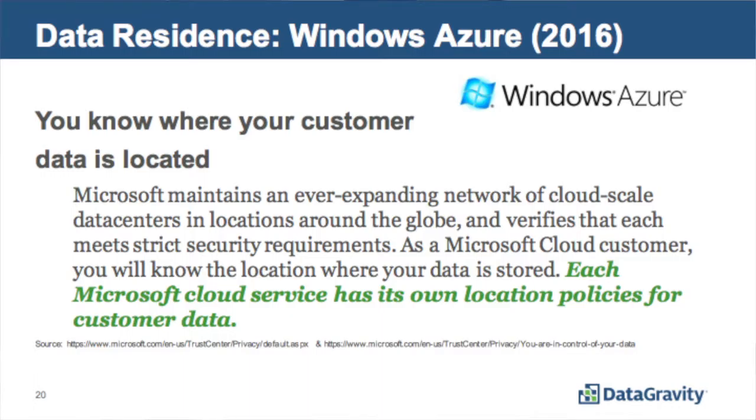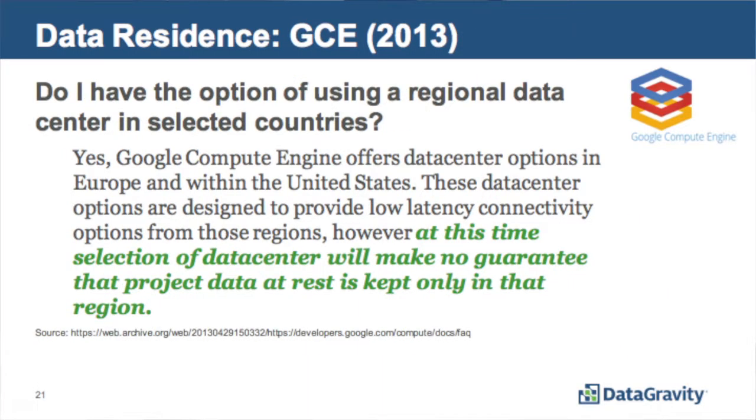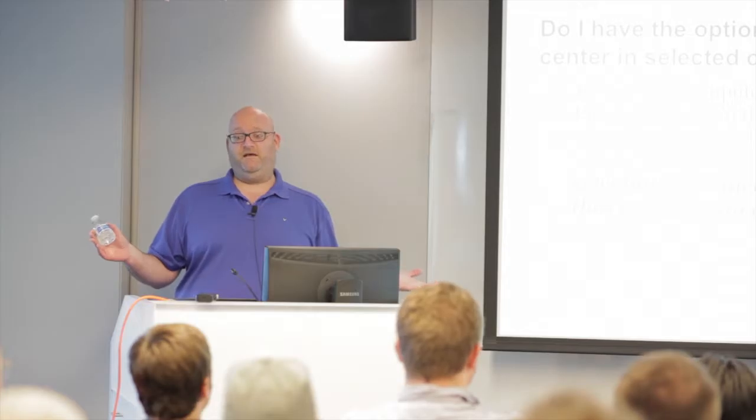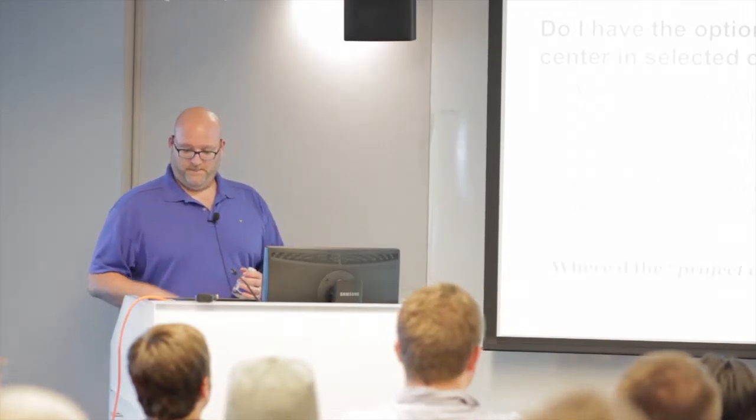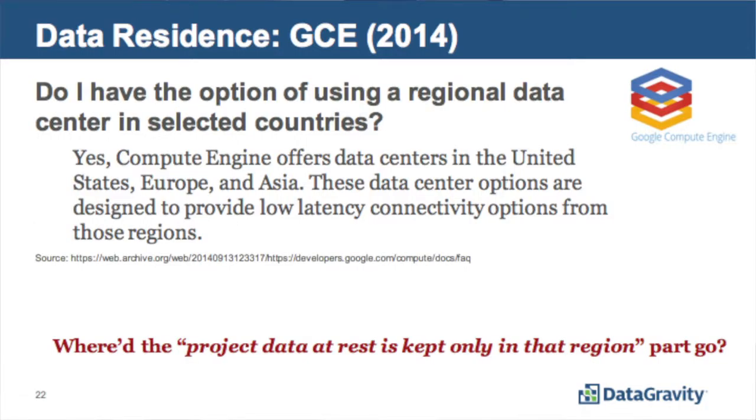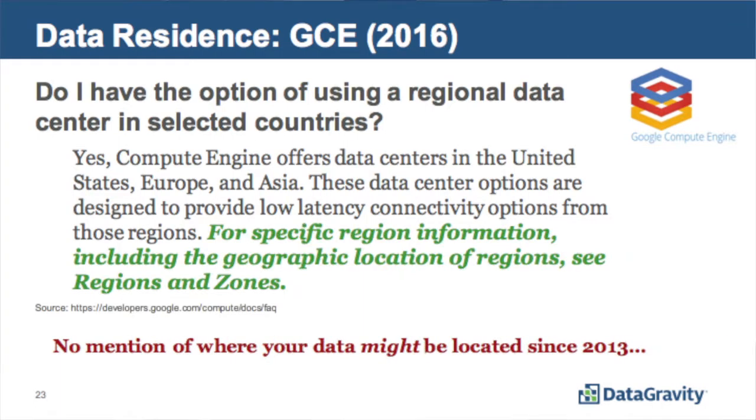Azure 2012. I actually like this quite a bit. They will replicate between two sub-regions within the same major region for enhanced data durability. That sounds awesome unless I'm doing incident response. Google 2013. Customers can choose to disable that feature for the replication. It's not in the documentation anymore. In 2016, each Microsoft cloud service has its own location policies for customer data. Safe Harbor. Google, back in 2013, selection of data center will make no guarantee that project data at rest is kept only in that region.